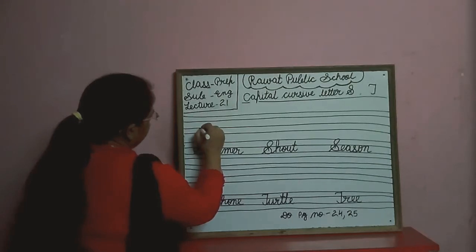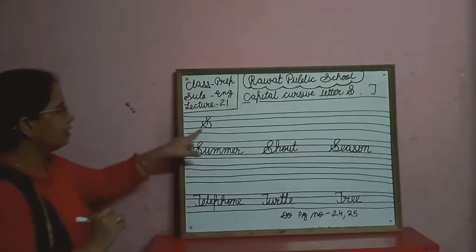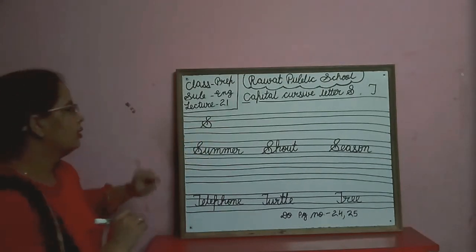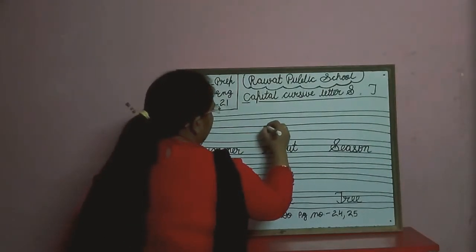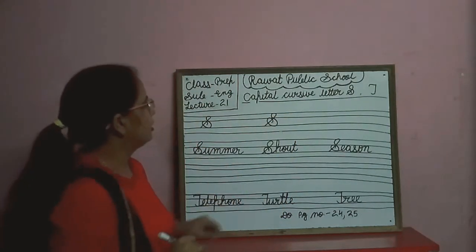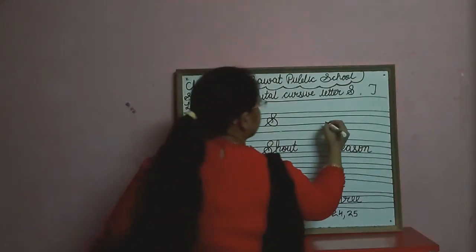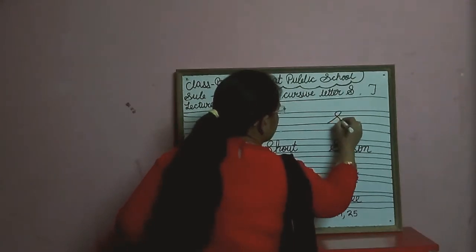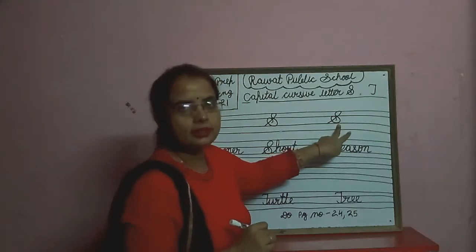We make a slanting line, go up, make a curve and curve — this is capital cursive S. Once again: make a slanting line, go up, make a small circle, curve — this is capital cursive S. Go up, make a circle — this is capital cursive S.